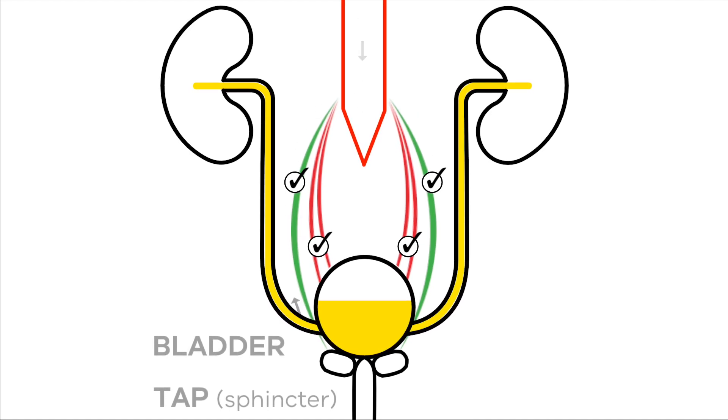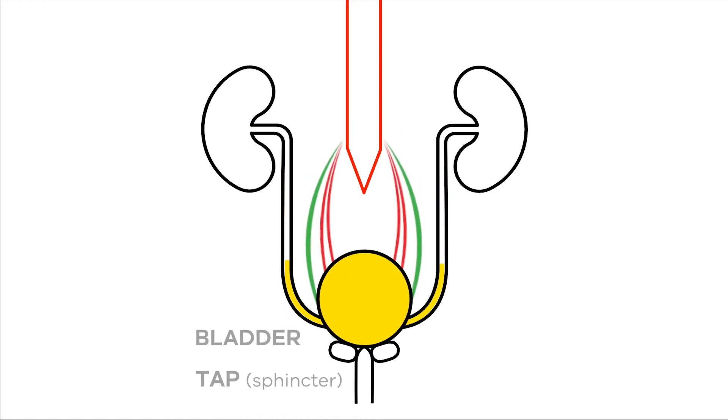The bladder is filling and the nerves allow it to fill and stay relaxed. The tap is held tight so nothing leaks out. At this stage, the pressure in the bladder is low. The bladder starts to feel full and tries to empty using the automatic nerves.